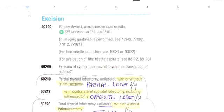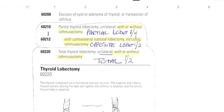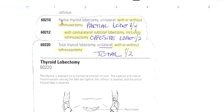The first two codes are biopsy and then an excision of an adenoma or a cyst. But this is where they start for the thyroidectomy code. 60210 is partial thyroid lobectomy unilateral, and this is with or without the isthmus.